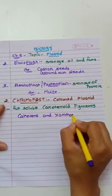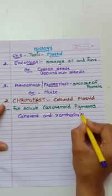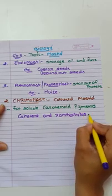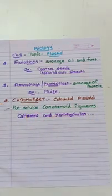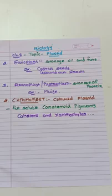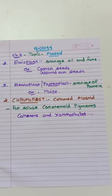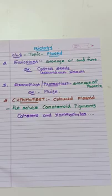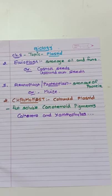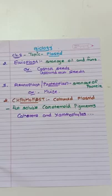Carotenoids and xanthophylls are present in chromoplast and give the color of various parts of the plants like flower, fruit, petals, etc. Carotenoids give orange color; xanthophylls give yellow color. Besides this, pheoplasts are also present, which give a brown color to plant parts or algae parts. So chromoplasts are colored plastids that have pigments giving various colors to various parts of plants.